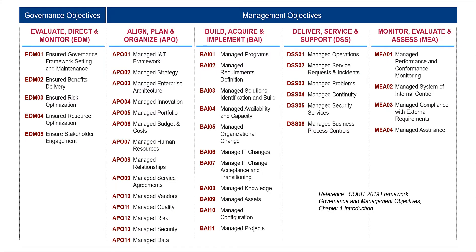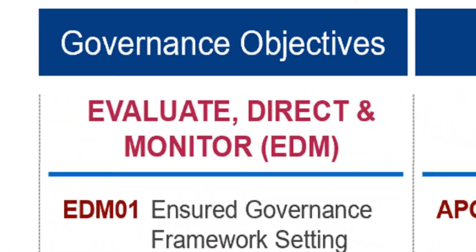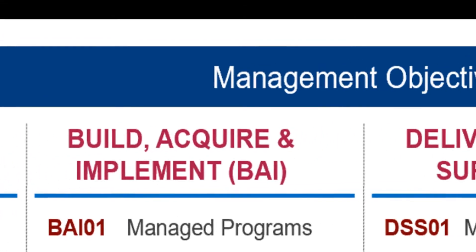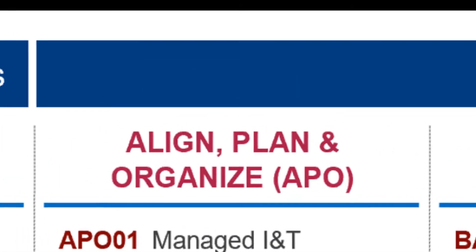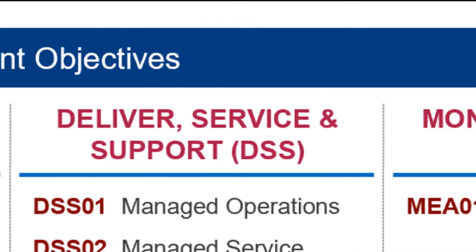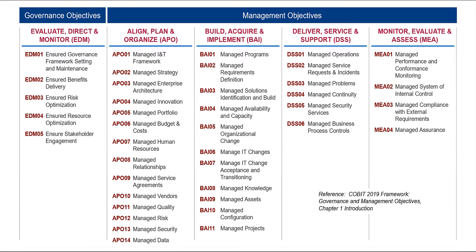Looking at this layout, on the left-hand side we have Governance Objectives — you might remember these as the processes in COBIT 5. We call this EDM, or Evaluate, Direct, and Monitor. To the right of that you see Management Objectives: Align, Plan, and Organize; Build, Acquire, and Implement; Deliver, Service, and Support; and finally, Monitor, Evaluate, and Assess.